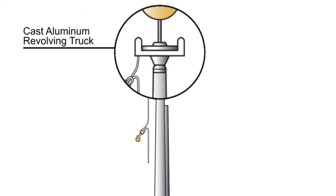The cast aluminum revolving truck keeps the flag windward, preventing your flag from wrapping around the pole.